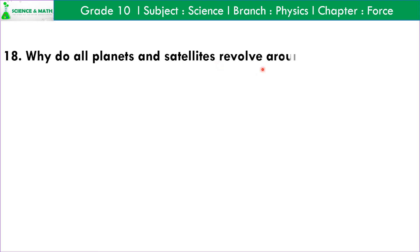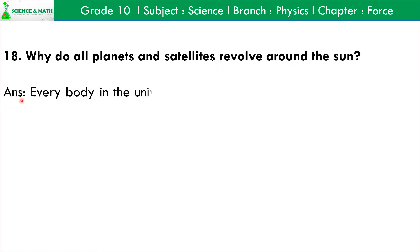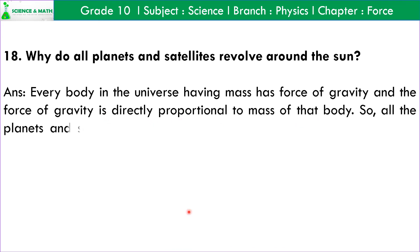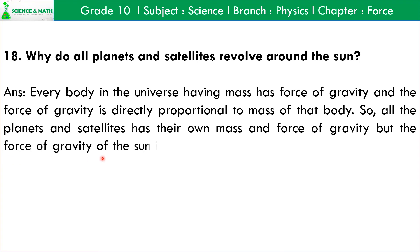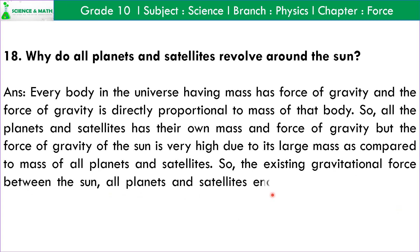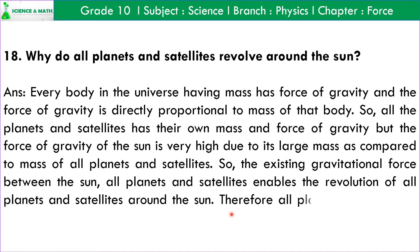Question number 18: Why do all planets and satellites revolve around the sun? Answer: Every body in the universe having mass has a force of gravity, and the force of gravity is directly proportional to the mass of that body. All planets and satellites have their own mass and force of gravity, but the force of gravity of the sun is very high due to its large mass. So the existing gravitational force between the sun and all planets and satellites enables their revolution around the sun.